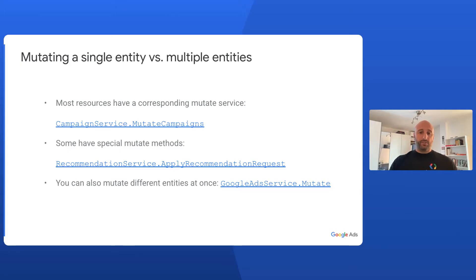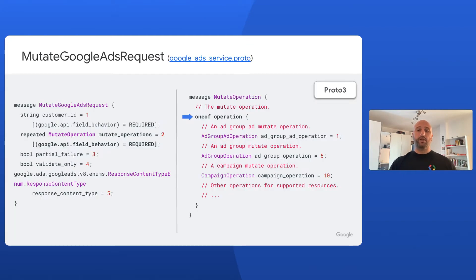Let's start by demonstrating how to mutate multiple entities at once. Usually, when you want to update a resource, you use the corresponding mutate method in the Google Ads API, like CampaignService.MutateCampaigns, or any of the other more specific endpoints, like RecommendationService.ApplyRecommendationRequest. However, you can also mutate several different resources in a single API call using the GoogleAdsService.Mutate method. The GoogleAdsService.Mutate method accepts a request that can contain entities of different types, while specific mutate operations like CampaignService.MutateCampaigns only allow you to mutate a single entity type, like Campaigns.